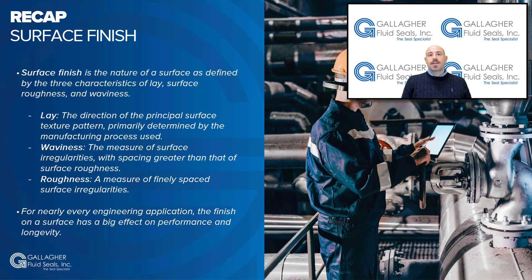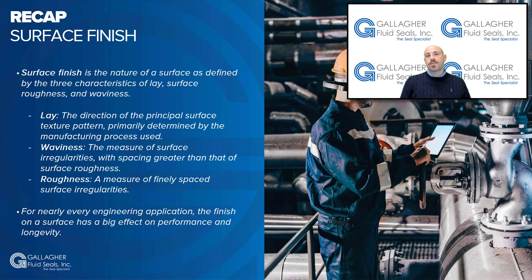To recap what we've discussed in today's webinar: surface finish is the nature of a surface as defined by its three characteristics — lay, waviness, and roughness. Lay is the direction of the dominant surface texture pattern as determined by the manufacturing operation used. Waviness is the measurement of surface irregularities with spacing greater than surface roughness. And finally, roughness is the measurement of the finely spaced surface irregularities.